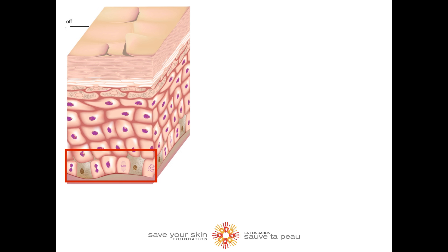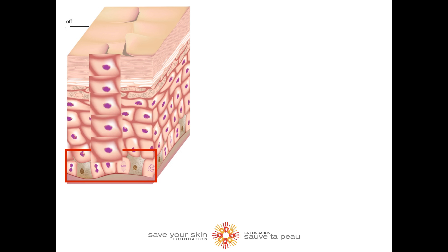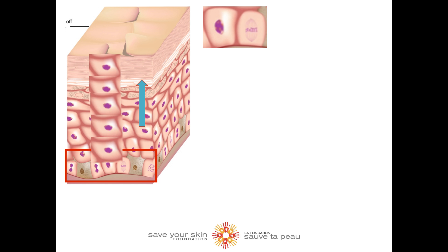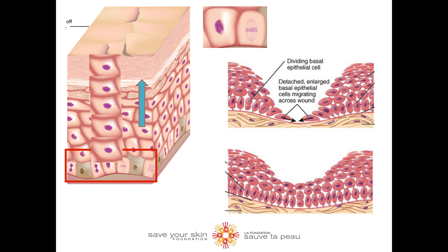Within the epidermis, new cells from the basal layer slowly move up to replace the dead skin cells that fall off the top. So our skin is constantly renewing its cells, but at a controlled pace. These basal cells are responsible for making new skin cells in normal cases such as skin renewal, but also when we have a wound and need it to heal more quickly.